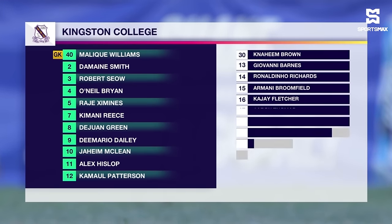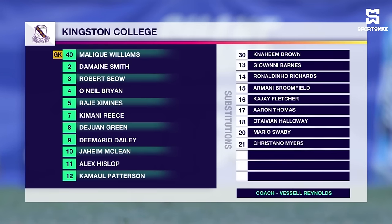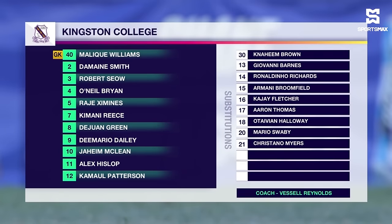Let's take a look at the starting lineup of Kingston College. They have the 4-3-3 formation. Malik Williams between the sticks. Ziminez, Siao, Bryan and Patterson the back four. Deshaun Green, McLean and Alex Heslop — who has eight goals to his name — part of a midfield three. Demario Daly with 14 goals leads the line alongside Kimani Rees and Domain Smith.